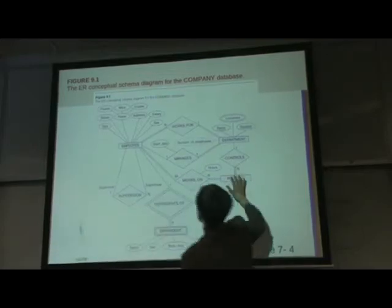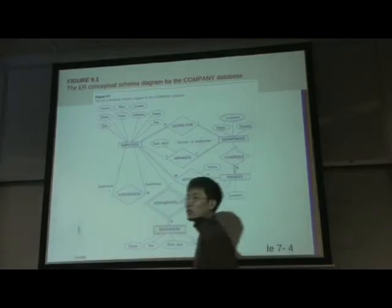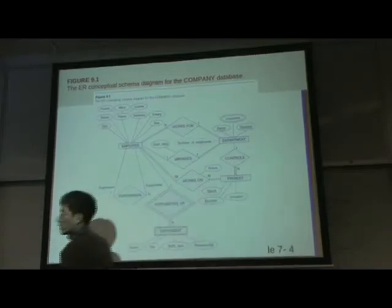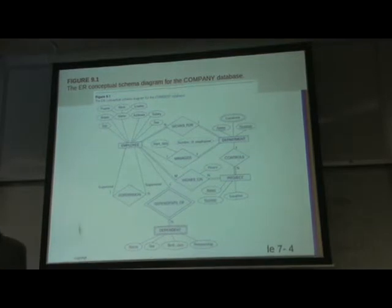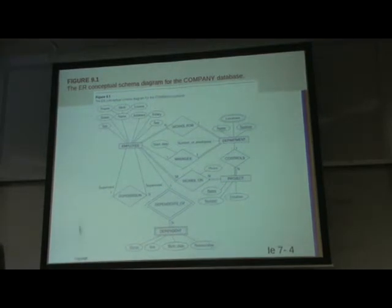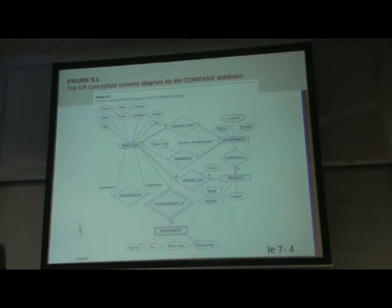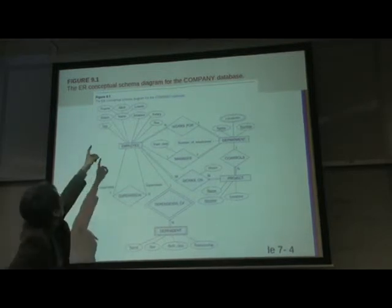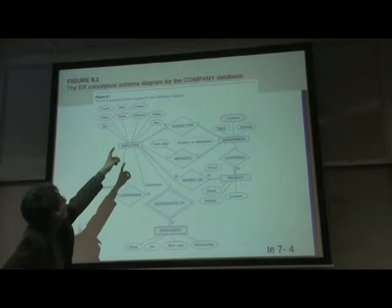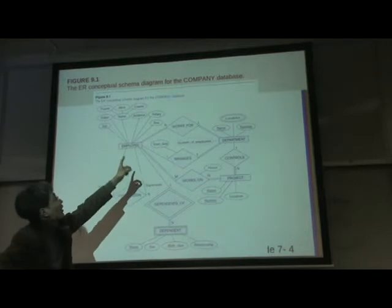It cannot be a table. These three will be strong keys. Use each attribute as the column of the relation. For example: B_date, address, salary, sex.